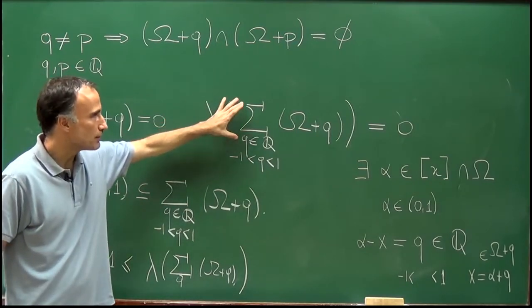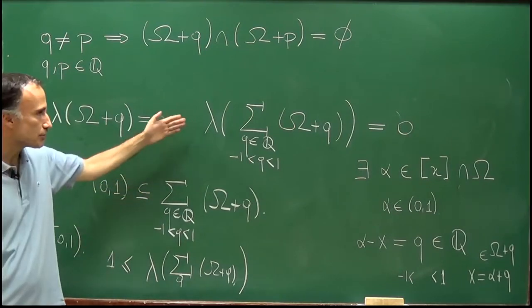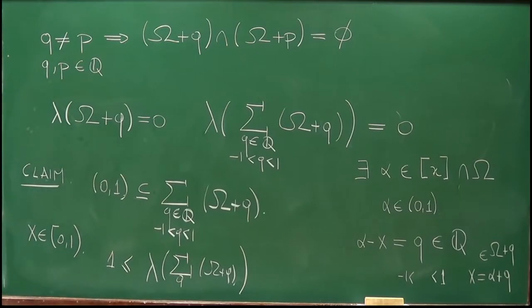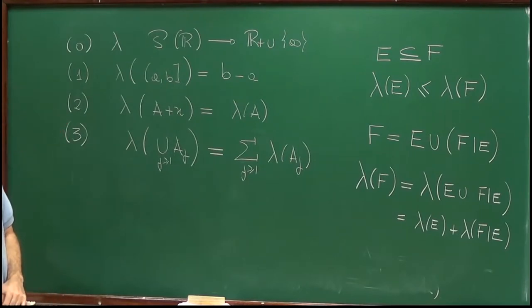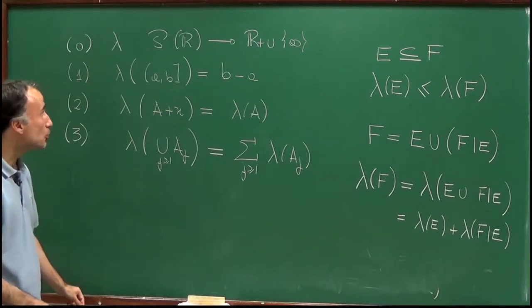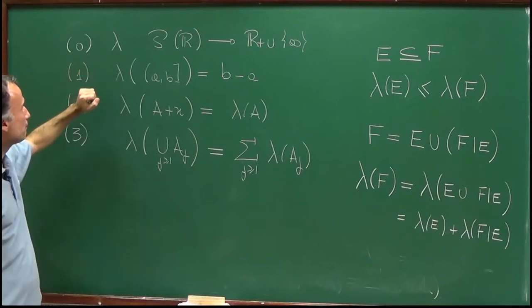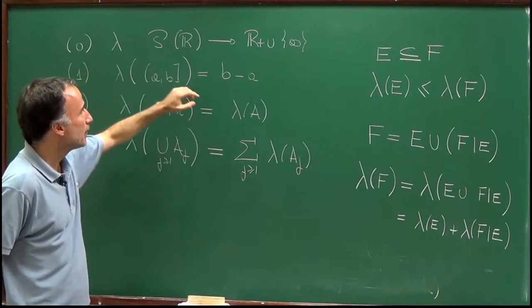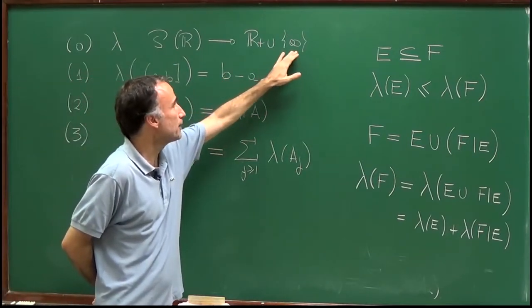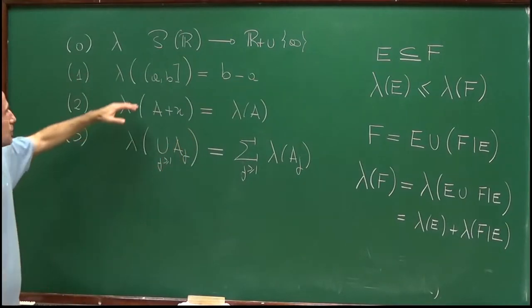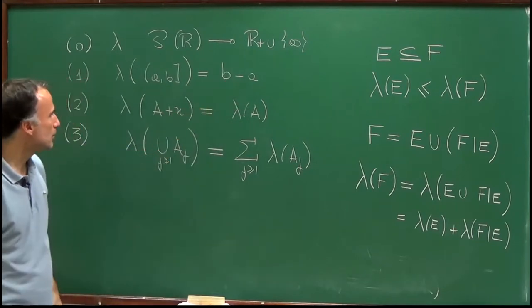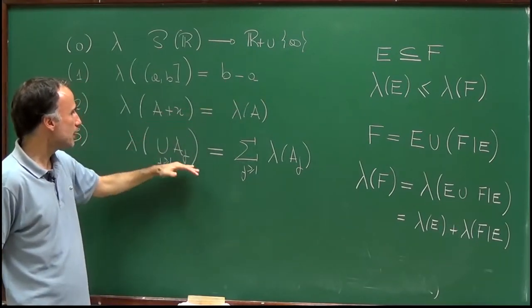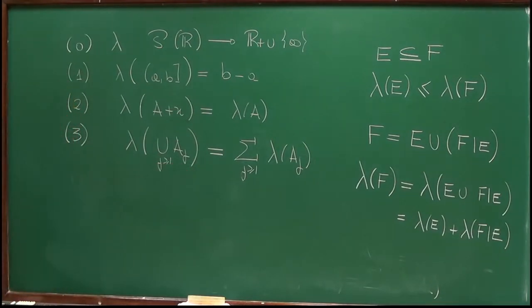Since the union contains [0,1], we know the measure of the union is greater than or equal to 1. But we proved before that the measure of this union equals 0. So 1 ≤ 0, which is a contradiction — showing that it is not possible to have a function satisfying all four properties.